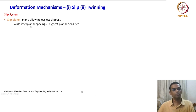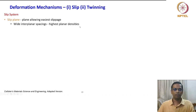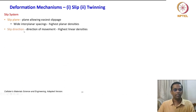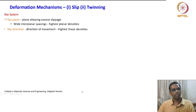Wide interplanar spacings and highest planar densities are the very important requirements for easy slip to take place. Then there is a slip direction — the direction of movement with the highest linear density. A slip system consists of a slip plane and a slip direction — these are all the attributes.